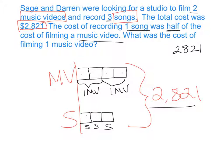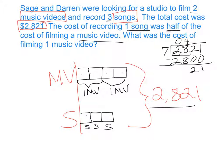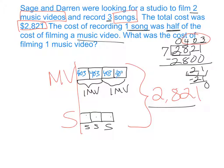$2,821 divided by seven boxes — we're going to do this with the concrete algorithm. Two divided by seven is zero. 28 divided by seven is four; 400 times seven is 2,800. We subtract and we have 21. Now in the tens place: two divided by seven is zero. Now in the ones place: 21 ones — 21 divided by seven is three. We subtract and there's no remainder. So our quotient is 403, which goes into every single box, because when we divide the total by the number of boxes, the answer is the value of each and every box.